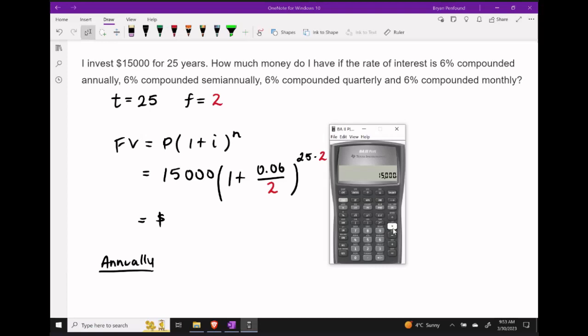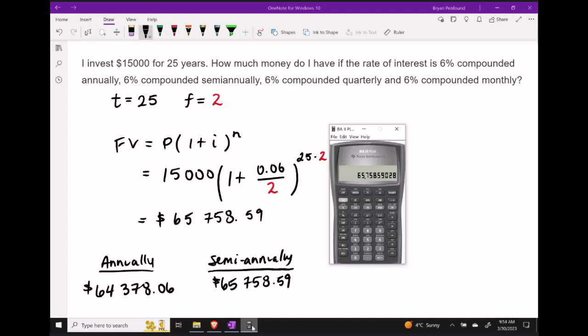So let's start again with our $15,000 present value, open bracket, 1 plus .06 over 2, close that bracket, and use our y to the x button to get 25 times 2, which is 50 into the power. This gives us a future value of $65,758.59.